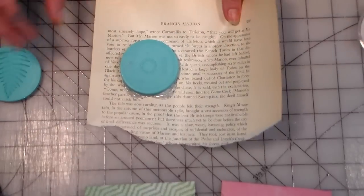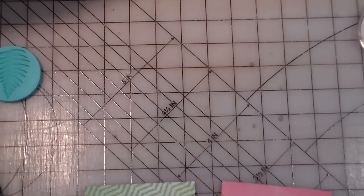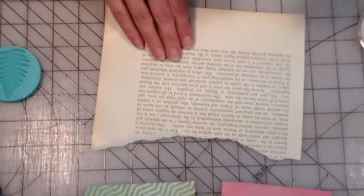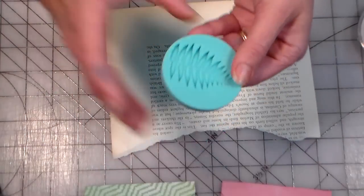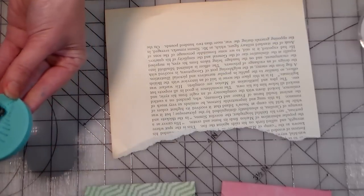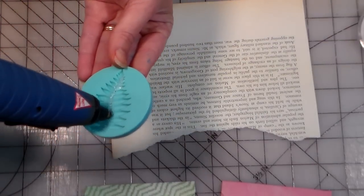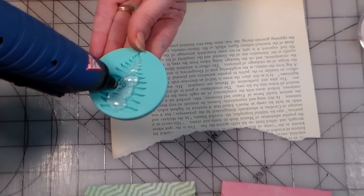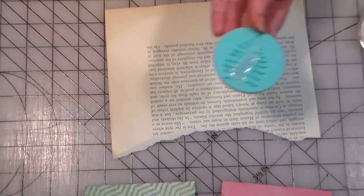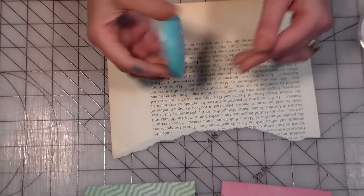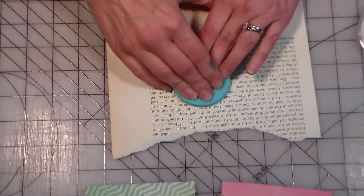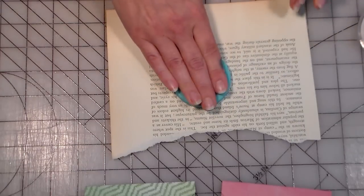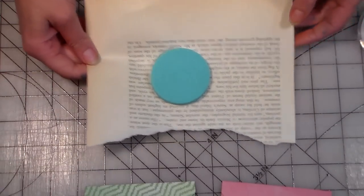Then you want to set that aside to dry. I also want to do this one here, set that aside and grab another paper. This is a much shallower mold so it won't take quite as long to dry. You don't have to be too perfect either because when you squish it, it's going to fill in all the gaps.